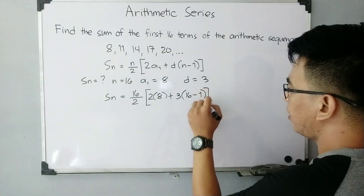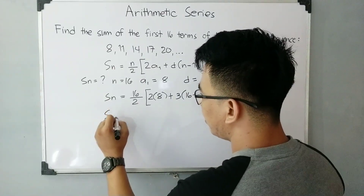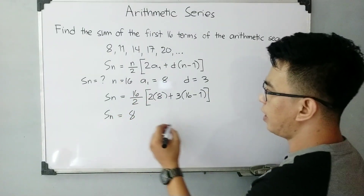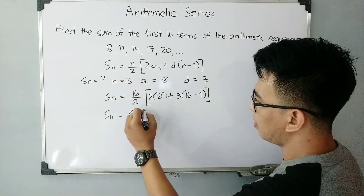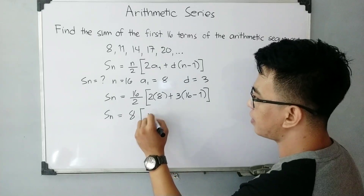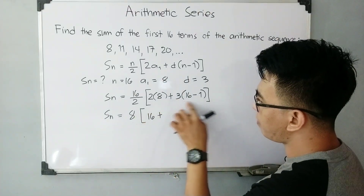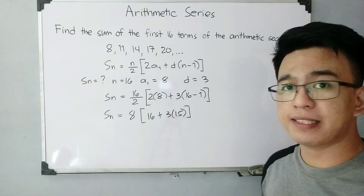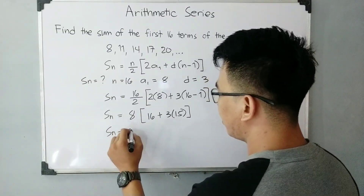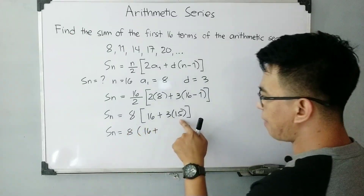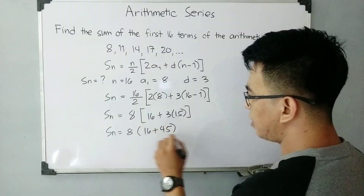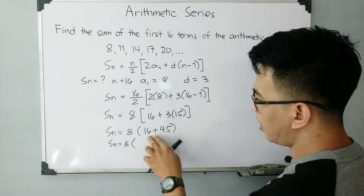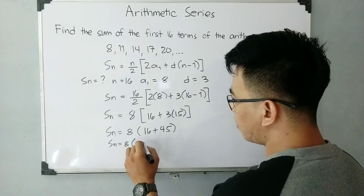We simplify step by step. S sub n = 8 times (2 times 8 + 3 times 15). Inside the parenthesis: 2 times 8 is 16, and 3 times 15 is 45. So S sub n = 8 times (16 + 45), which is 8 times 61.